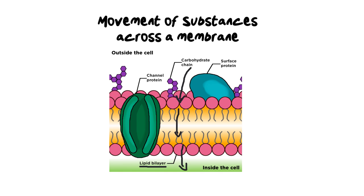You'll also notice in this membrane there is something called a channel protein. There are many different kinds of channel proteins, but essentially they are proteins embedded in the bilipid layer that allow only certain substances to move through. You have to be the right size and the right shape — this is where the selectively permeable or differentially permeable aspect of a membrane comes in.